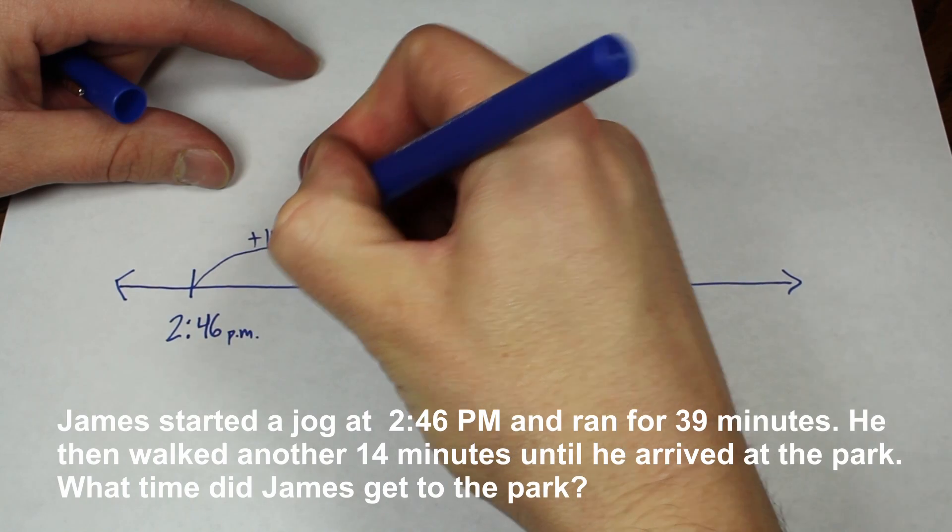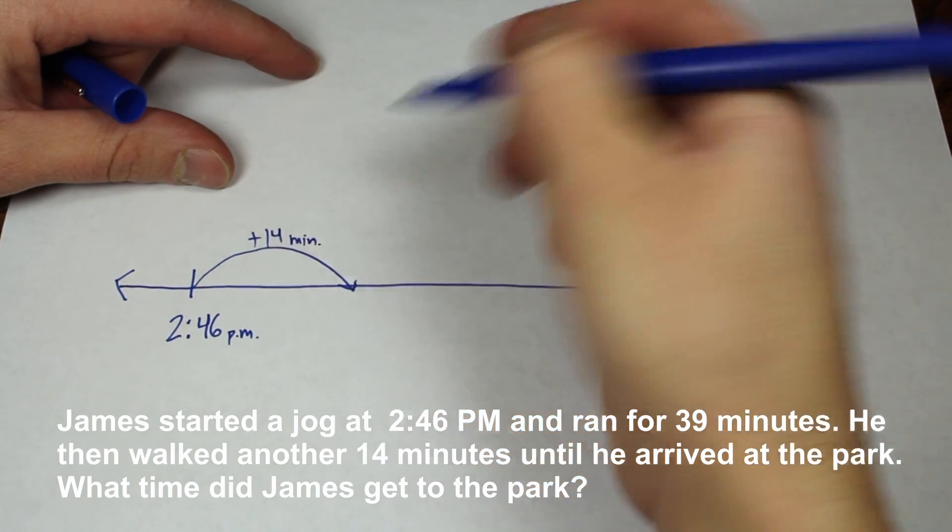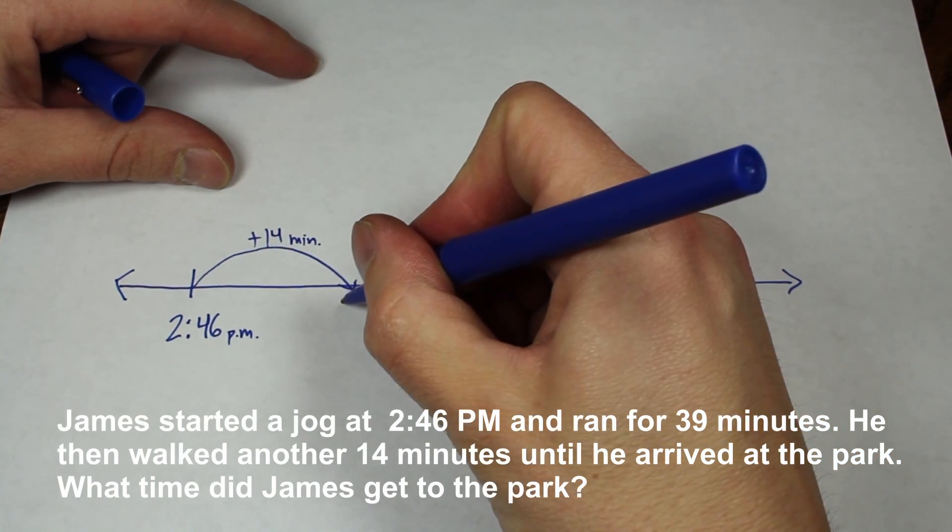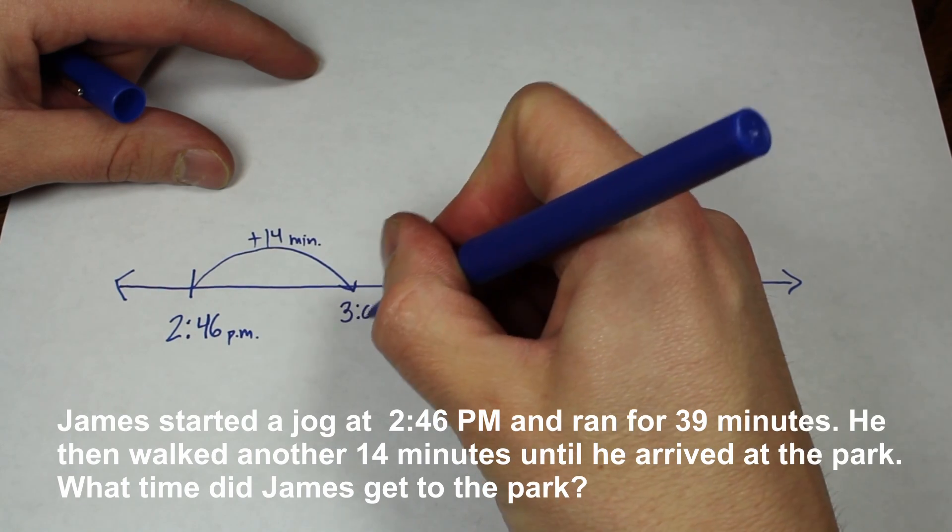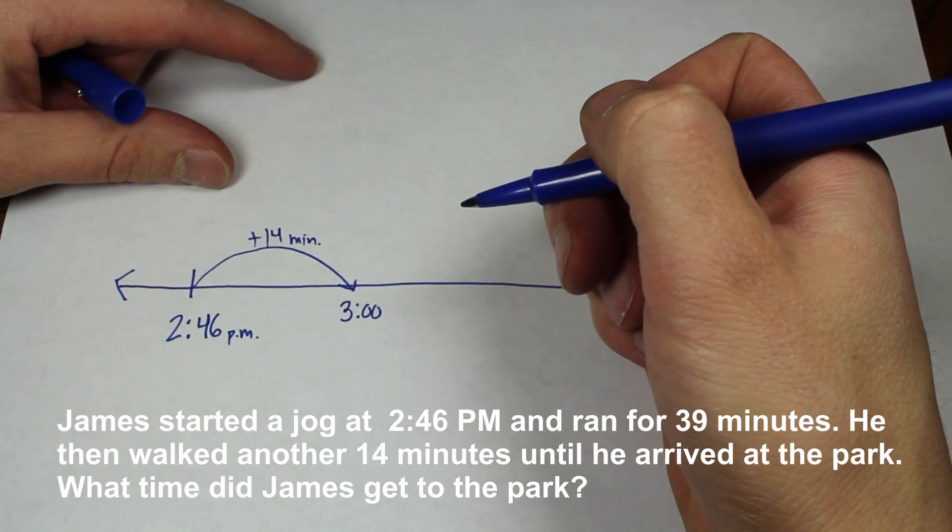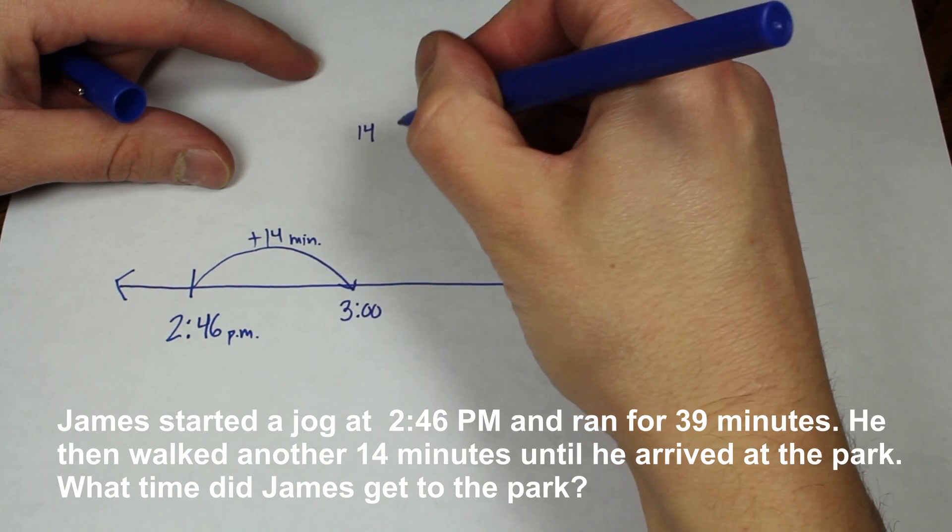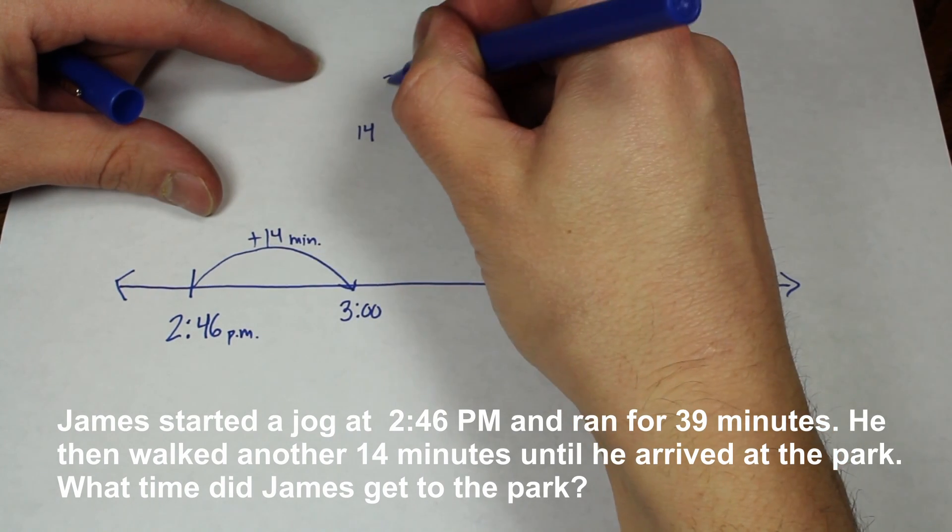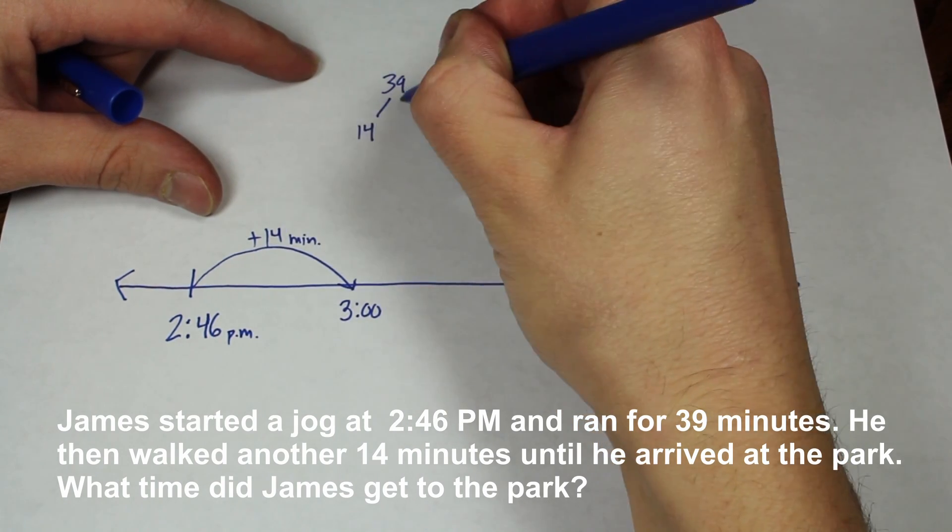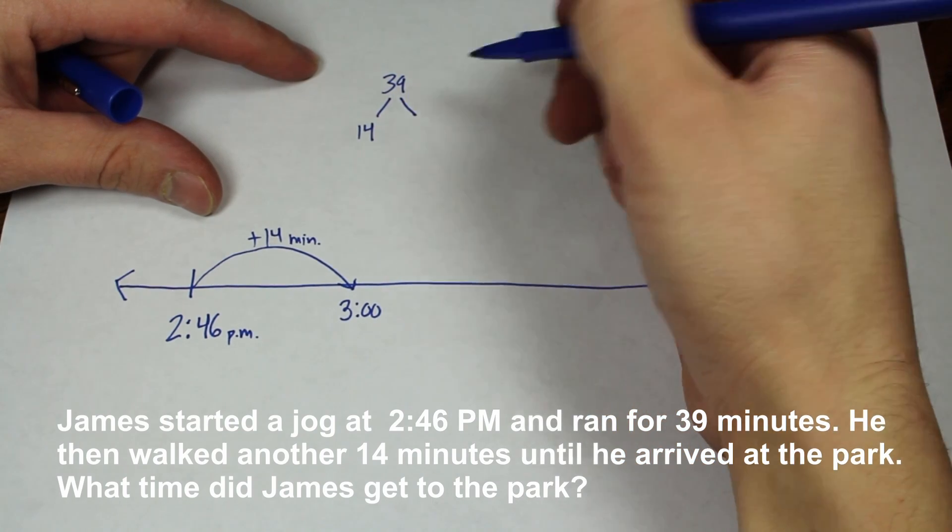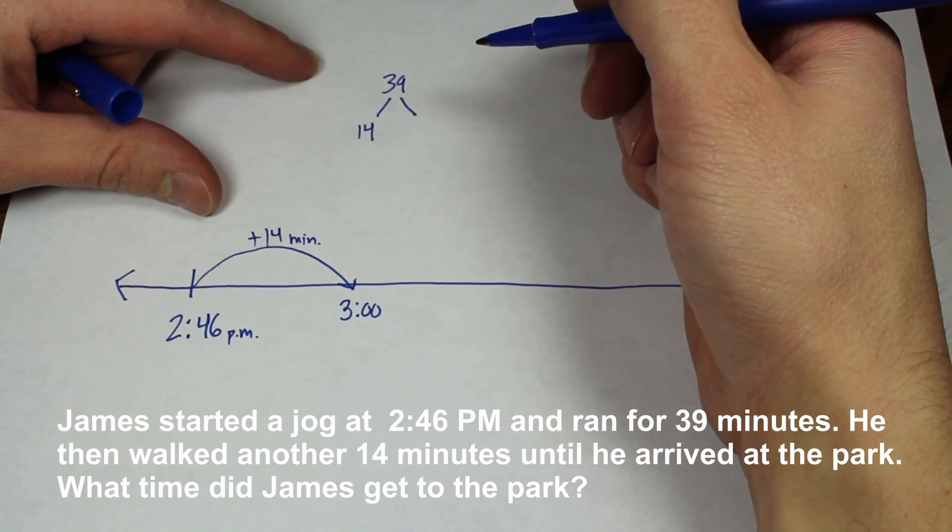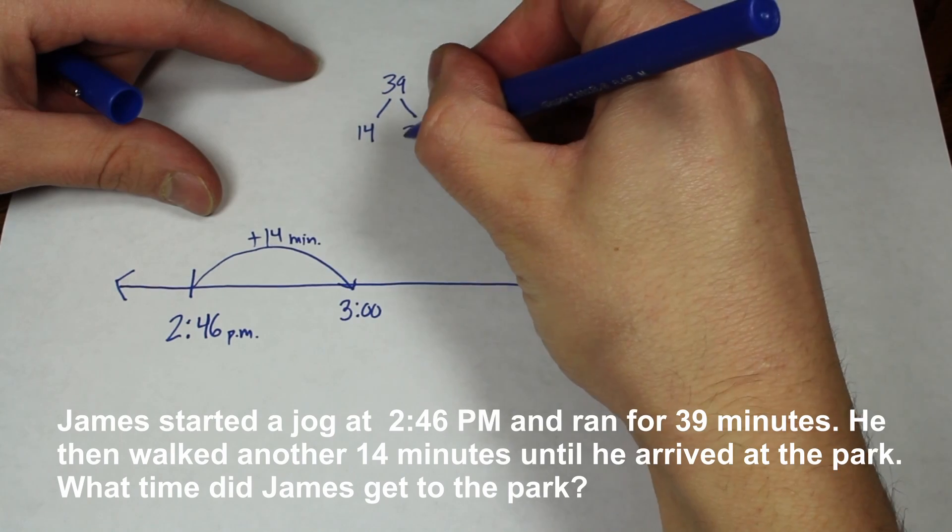So we add 14 minutes. And like I said, 14 minutes would get us to 3 o'clock. So we used up 14 minutes of our 39 minutes. So how many minutes do we have left of that 39 minutes? It's going to be 25.